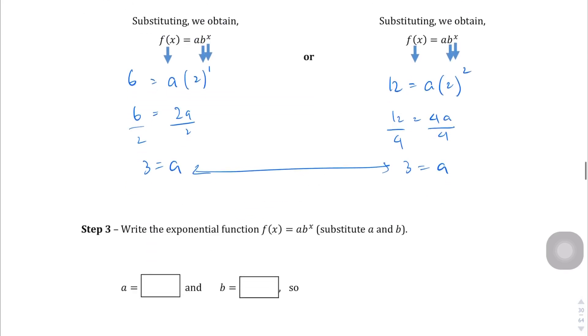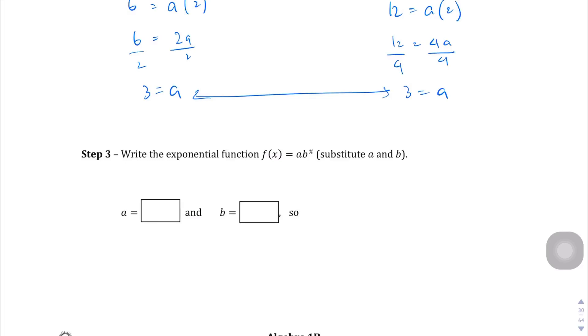So step 3, we can actually get to plugging in, right? We found out that a equals 3 and b equals 2. And so if we write the exponential function, f of x equals a, which is 3, times b, which is 2 to the power of x. And this looks like 32, so let's be careful about putting the grouping symbols in the right way. So 3 times 2 to the power of x.